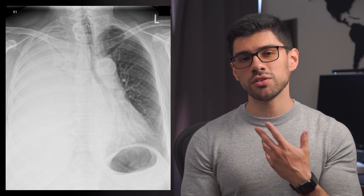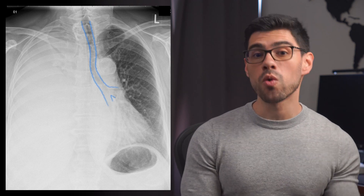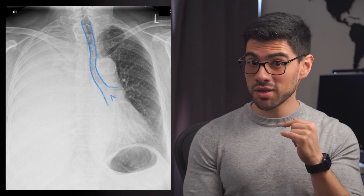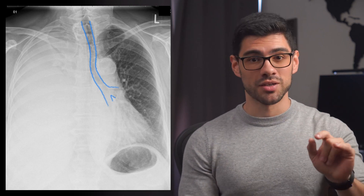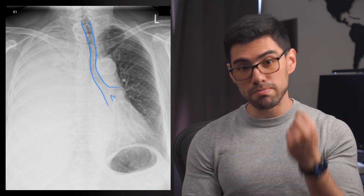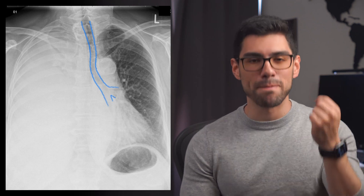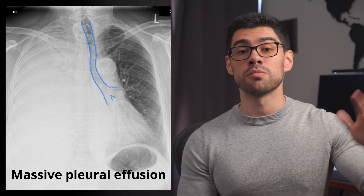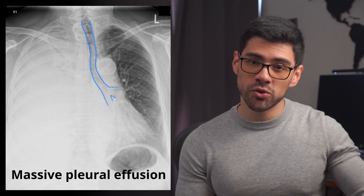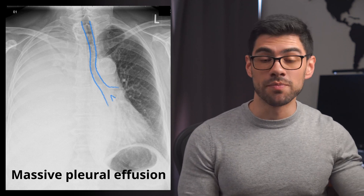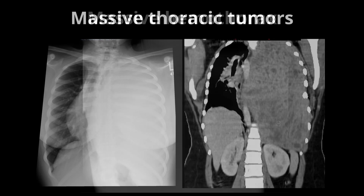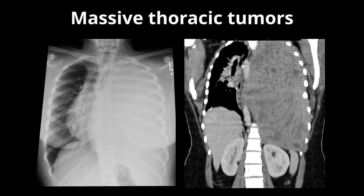The first image clearly shows the trachea being deviated away from the white lung, so we think the alveoli are being pushed. When this happens, our main differential is a massive pleural effusion — an accumulation of liquid in the pleural space that gradually pushes the lung toward the other side. There are other differential diagnoses to consider, but most involve either fluid accumulation or a tumor from the pleura or nearby tissues.